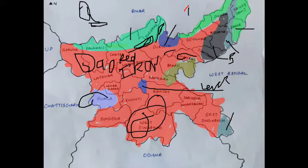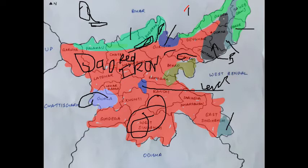Now this is black soil. Black soil is formed in the Rajmahal trap, formed by the decomposition of basalt rock, which mainly contains basalt.